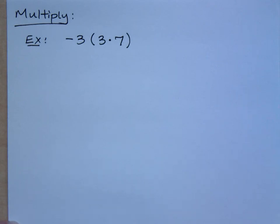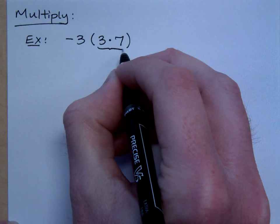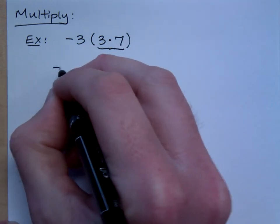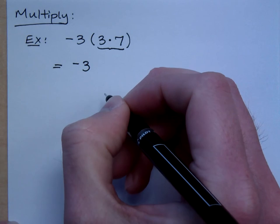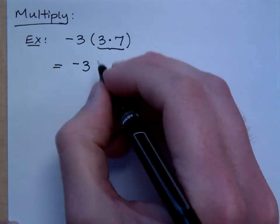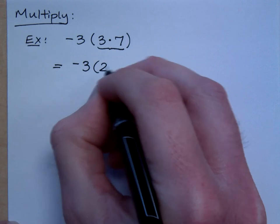So, when I look at this problem, I need to look first inside here. And what do I see? It's multiplication, so I get what? I get 21.